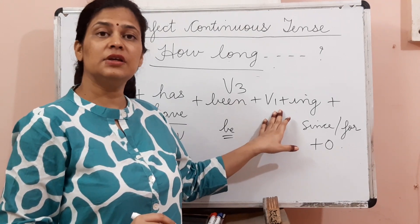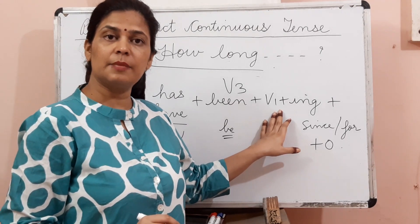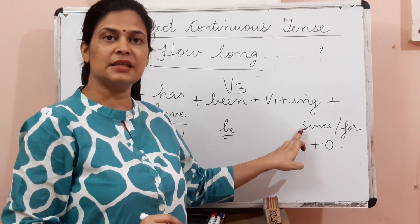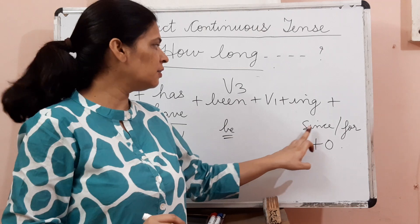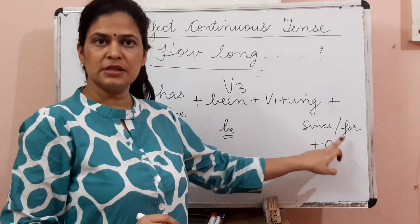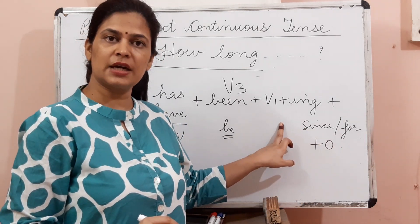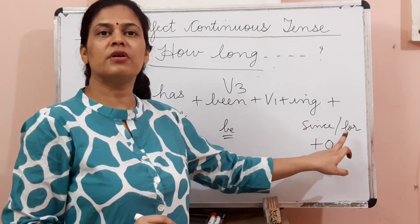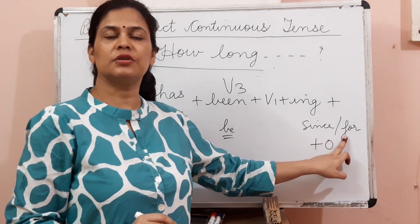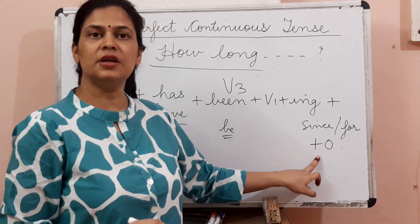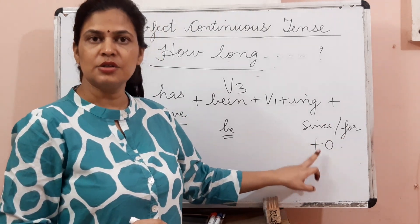We also tell about the time by using 'since' and 'for'. Since is used for the point of time, and 'for' is used for the duration of time. And then we have the object. So this is the basic structure of a present perfect continuous sentence.